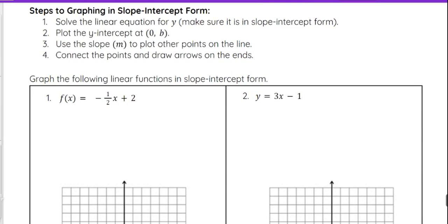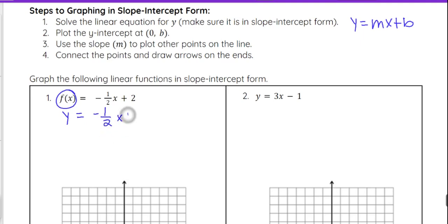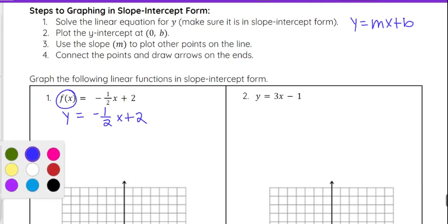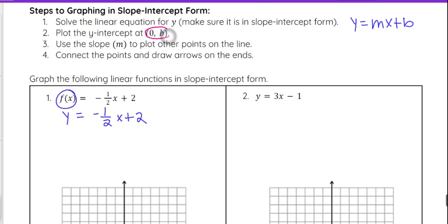Let's look at some steps to graph in slope-intercept form. First, you want to make sure that y is by itself — get it in slope-intercept form if it's not already. Remember, f of x really just means y equals, so you can rewrite it if that helps. Step two is to figure out m and b. You're going to start at zero comma b — your y-intercept — and then use the slope to plot at least one other point. Then connect those points and put arrows on the ends.